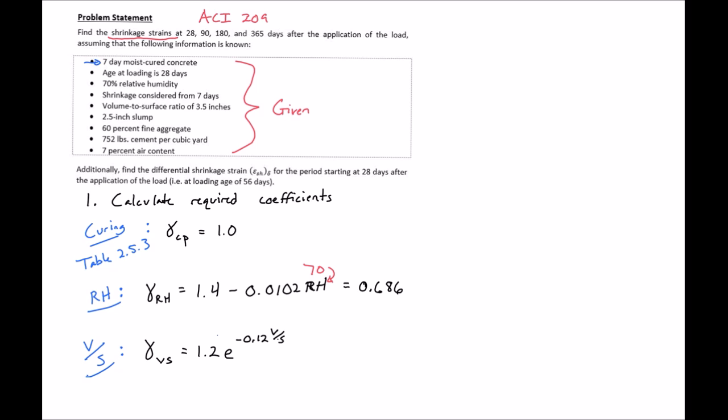We next have our volume to surface area ratio factor. In our case we have a volume to surface area ratio of 3.5 inches, so we'll plug in here 3.5 inches and find our factor to be 0.788.